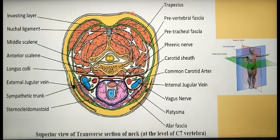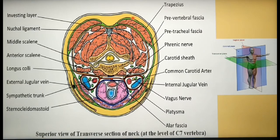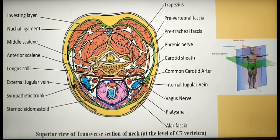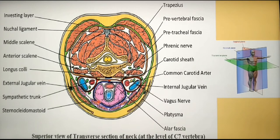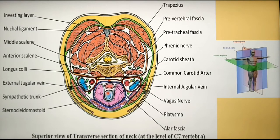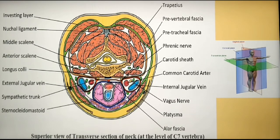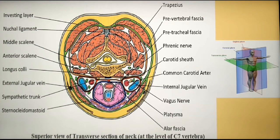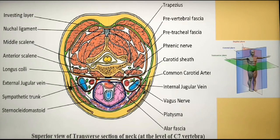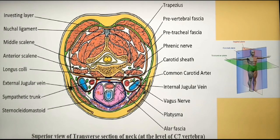The deep cervical fascia begins at the investing layer, which is shown in green color. The investing layer surrounds the entire cross-section of the neck. You can see the sternocleidomastoid muscle on either side and the smaller infrahyoid muscles. As you move further deeper, the structure in pink is the thyroid. The oval in blue is the trachea, and the structure behind the trachea in red is the esophagus. The thyroid, trachea, and esophagus are enclosed within the second layer of deep cervical fascia — the pretracheal layer, illustrated in blue color.